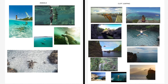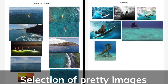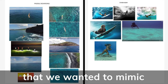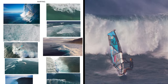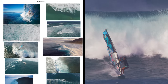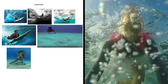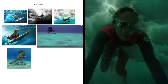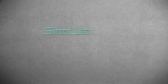Here's a lookbook we put together for a mini doc we made of a windsurfer. It's just a selection of pretty images that we wanted to try and mimic as we were shooting. In fact, for this shoot, this is the only step we did. We printed these pages out, laminated them, and every so often during the shoot, we referenced them to make sure we were getting what we wanted.